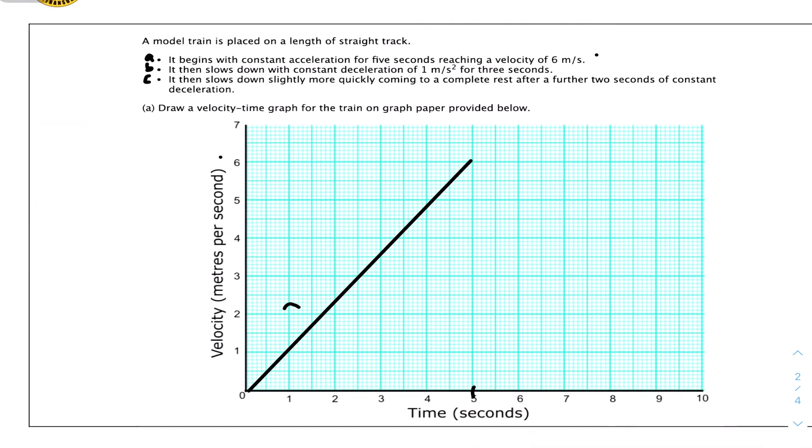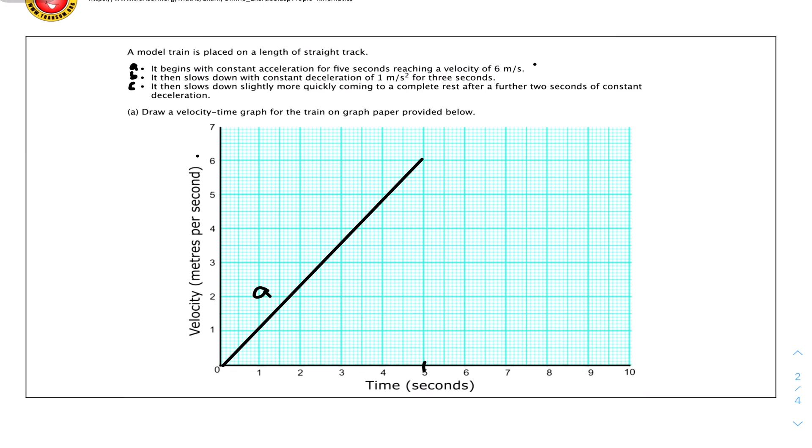Part b: it then slows down with constant deceleration of 1 meter per second squared for 3 seconds. So it will be the next 3 seconds, which is 5, 6, 7, 8. It decelerates at constant deceleration of 1 meter per second, which means for every second that passes, the velocity decreases by 1. Therefore from 6 seconds you get from 6 to 5 to 4 to 3, because it passes through 3 seconds. So it goes from 6 to 3 meters per second, ending at 8 seconds.